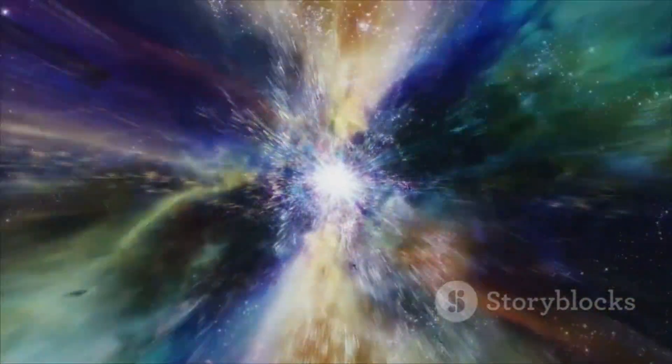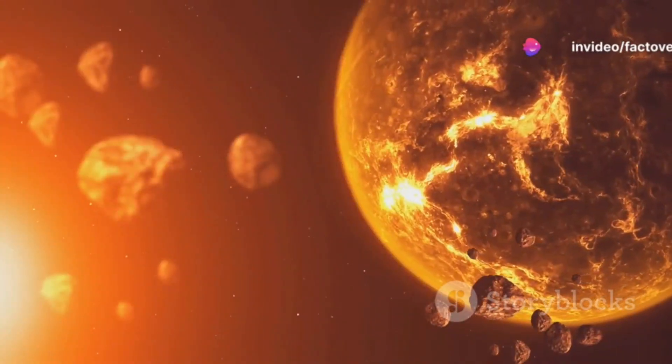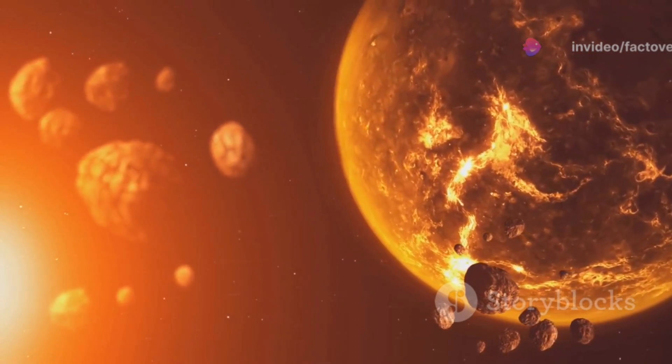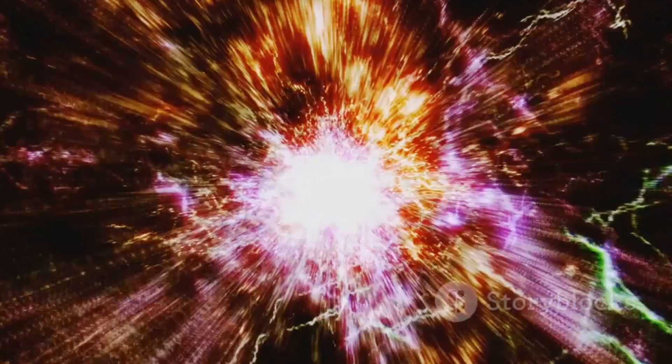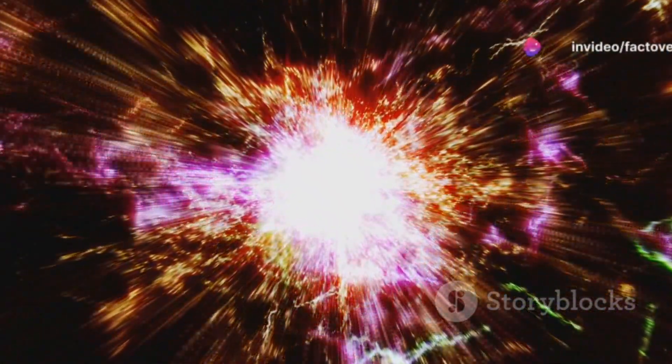The question of whether life can withstand a gamma-ray burst is a complex one, depending on the intensity and duration of the burst, as well as the planet's distance from the event. A direct hit from a nearby GRB would undoubtedly be catastrophic, but a glancing blow or a burst from a more distant source might have less severe consequences.